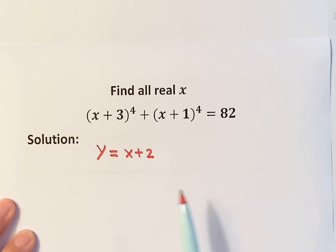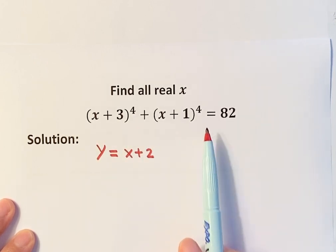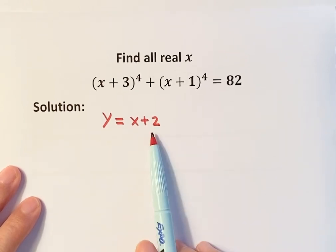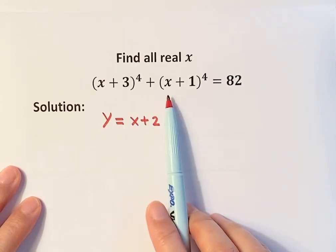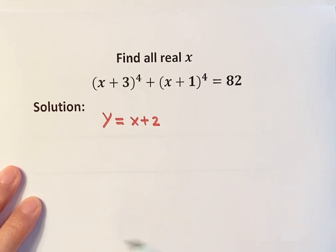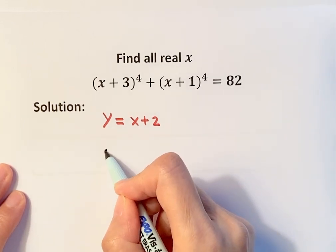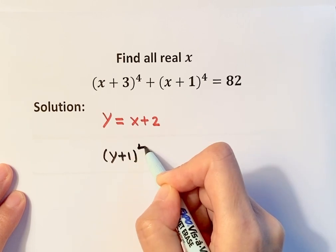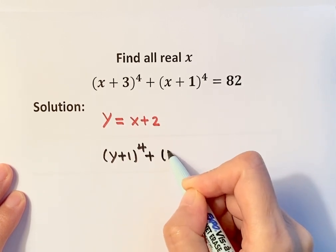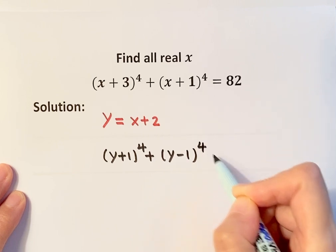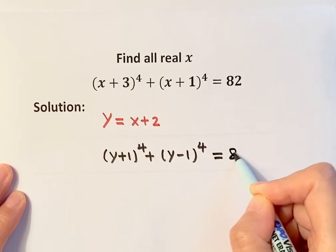So I'm going to use substitution to rewrite this equation. Using y = x+2, replace x here and here, then simplify. Then we have the following equation: (y+1)⁴ + (y-1)⁴ = 82.